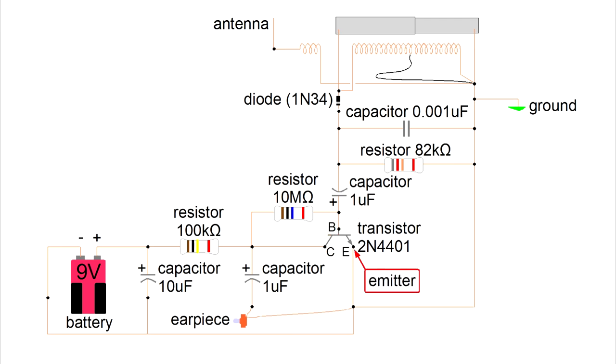The end with the arrow is called the emitter. So look for an E, or the word emitter, in your drawing. And this end is called the collector. So look for a C, or the word collector.